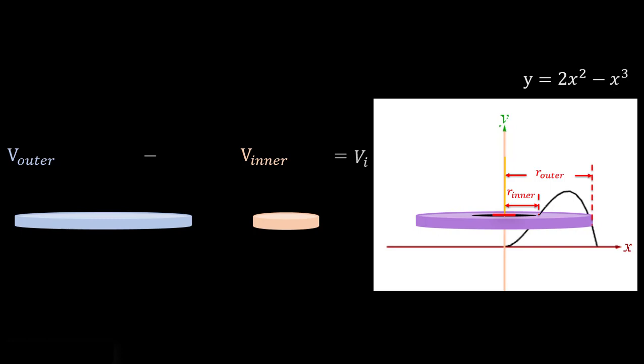So rather than trying to force the washer method here, the path of least resistance is going to be implementing the shell method instead. It's going to be a lot easier.